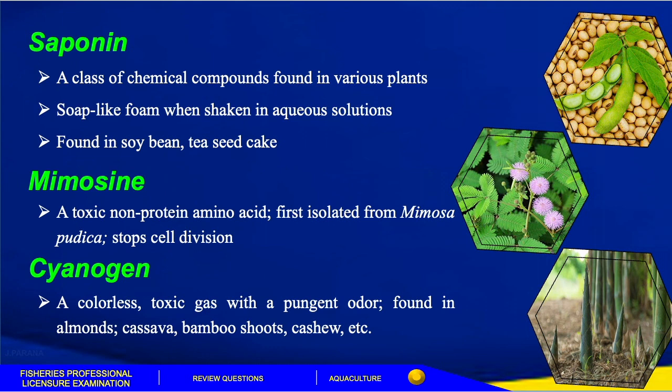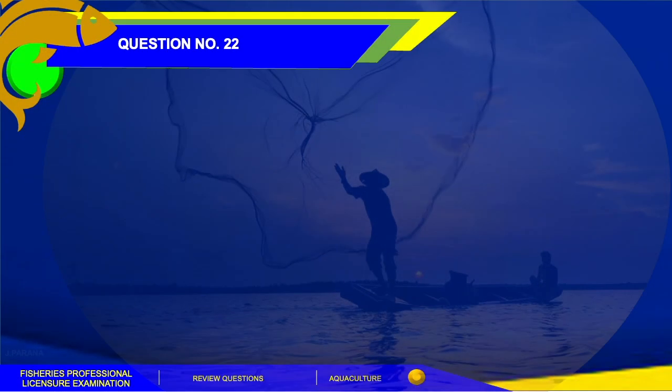Mimosine is a toxic non-protein amino acid first isolated from Mimosa pudica; it inhibits cell division. Cyanogen is a colorless toxic gas with a pungent odor found in almonds, cassava, bamboo shoots, cashew, and others.